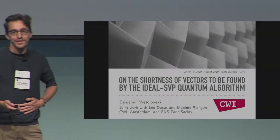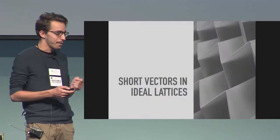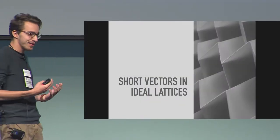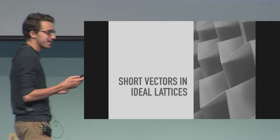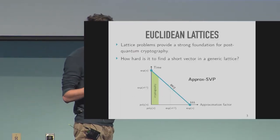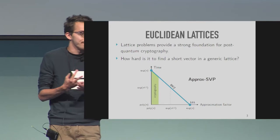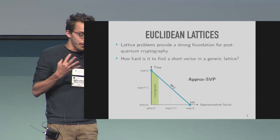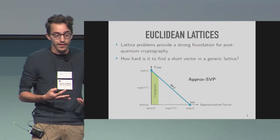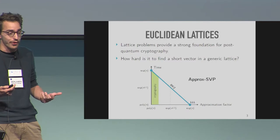Thank you for the introduction. I'm going to talk about short vectors in ideal lattices. Ideal lattices are a particular kind of Euclidean lattices. Computational problems in Euclidean lattices provide a strong foundation for post-quantum cryptography.